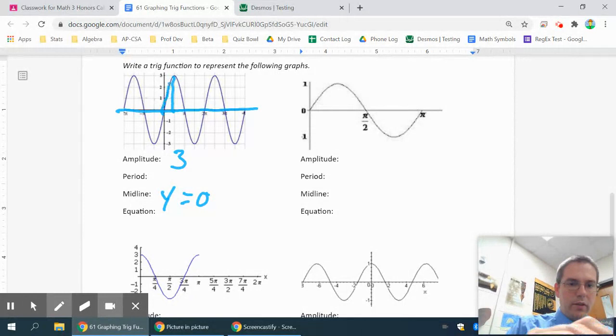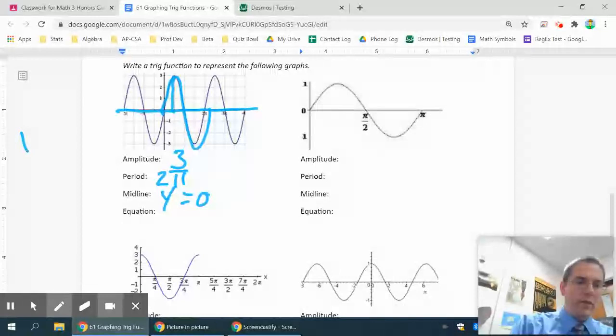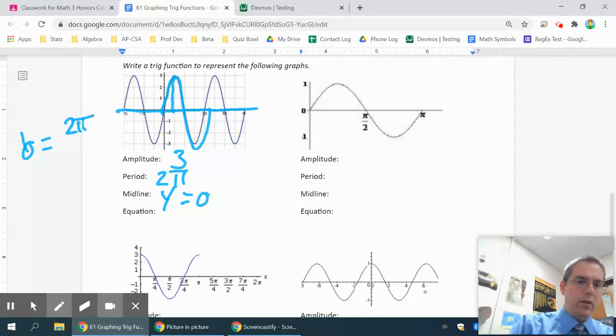And then to find the period, that's how long it takes it to repeat. So in this case, it takes 2 pi to repeat. And to get your b value, you always do your period divided by 2 pi, which in this case is 1.